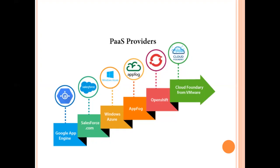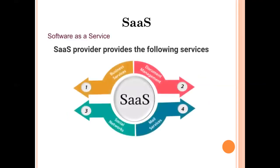Using PaaS, we can build, run, test, and deploy applications over the cloud without installing any software or environment on a local PC — just one PC and an internet connection are needed to develop web applications using popular programming languages like Java. PaaS provides infrastructure, platforms, storage, and databases, so applications can be easily developed. The next service model is SaaS, that is Software as a Service, the third and last cloud service model.